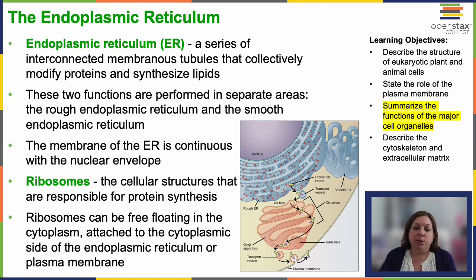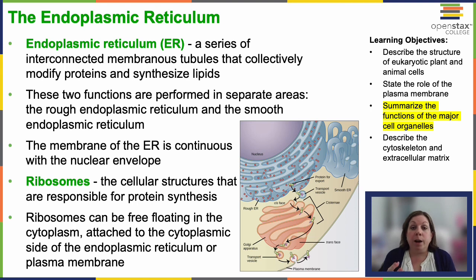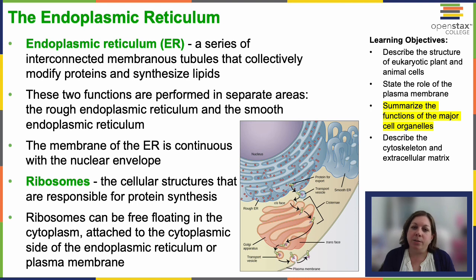The endoplasmic reticulum's morphology is characterized by an array of interconnected tubules and flattened sacs that collectively form a continuous membrane system — it looks kind of like a maze. It's classified into two regions: the rough ER, which has ribosomes attached to it, and the smooth ER, which specializes in lipid metabolism, calcium storage, and detoxification.